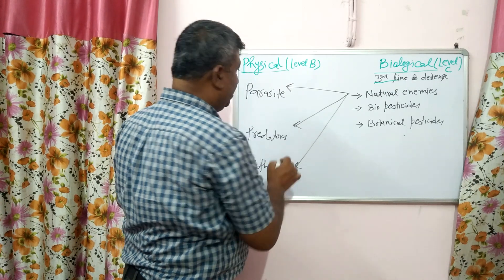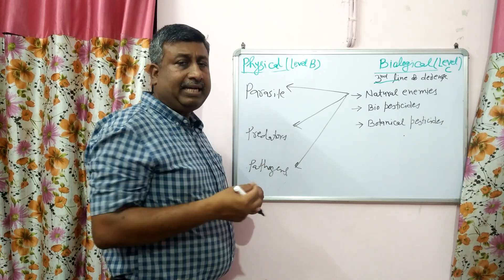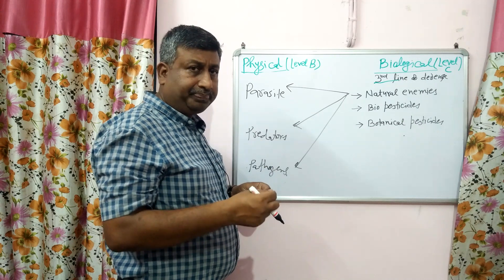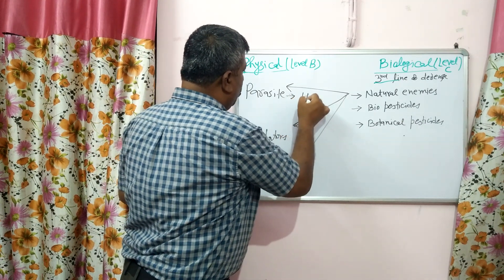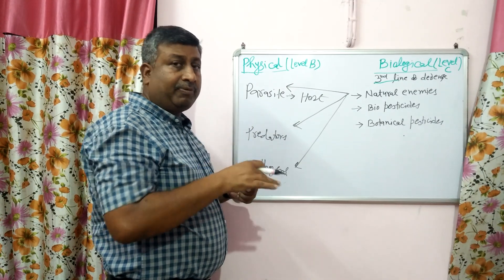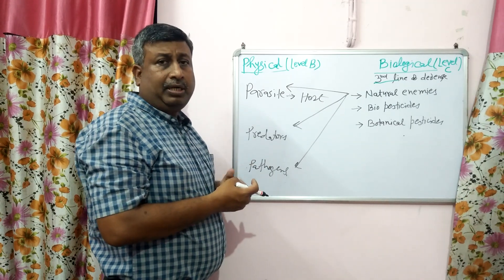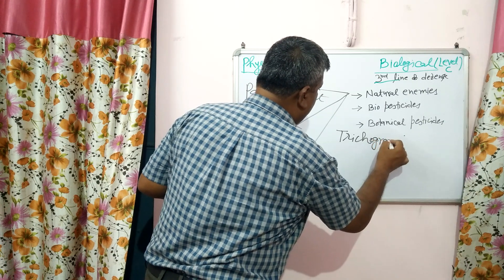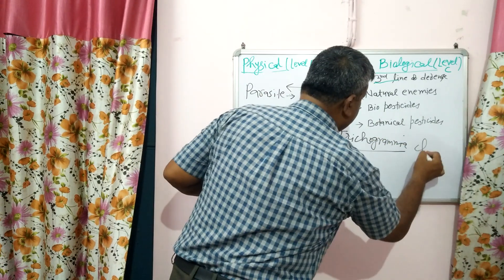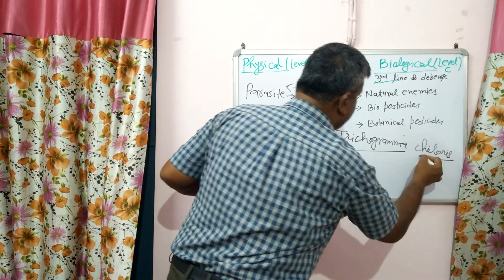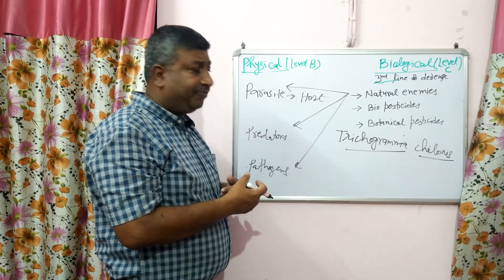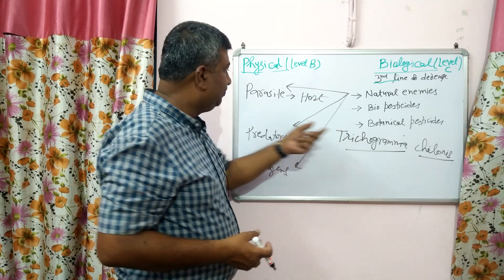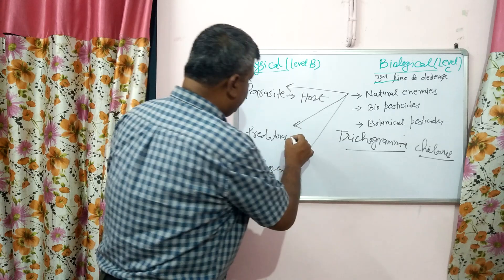Parasites live on or in insects, complete their life cycle on the host body, and do not kill the host — they only survive and feed on it. A very commonly used parasite in agriculture is Trichogramma chilonis, a small wasp. Its eggs are released in the field to control Lepidoptera insects, and it feeds on the host eggs. Trichogramma chilonis is frequently asked in examinations.